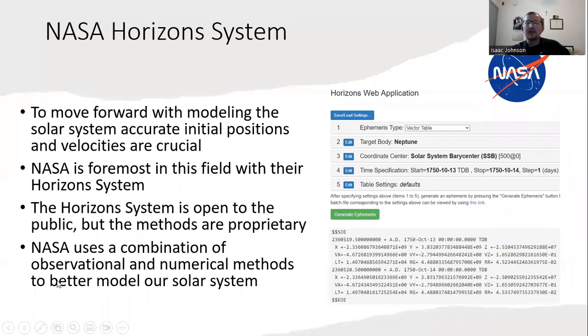Now that we have this four planet, one star system, to move forward we need accurate initial positions and velocities of the bodies we're interested in. NASA is the foremost in this field with their Horizons system. It's open to the public to use, but the methods are proprietary. They use a combination of observational and numerical methods to better model our solar system. You can pick your target body—I pick Neptune—coordinate center, pick a time, and then it spits out the Cartesian position vector and velocity vector. I can plug those into my program and let the velocity Verlet algorithm work its course.